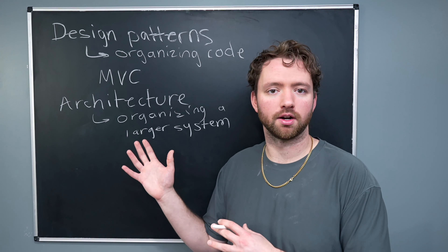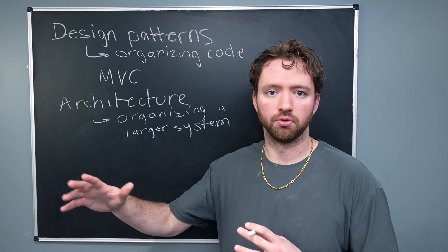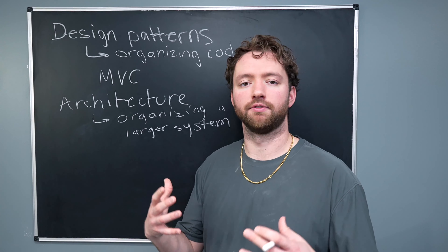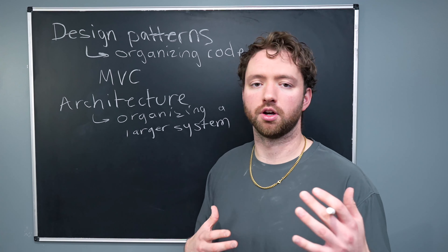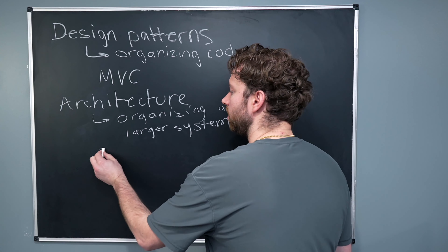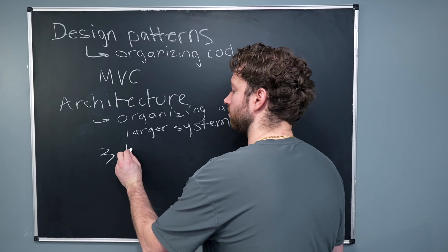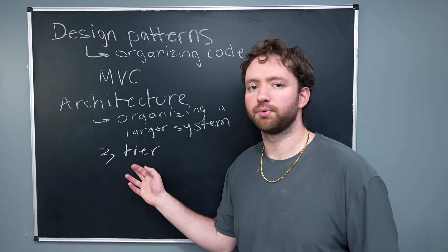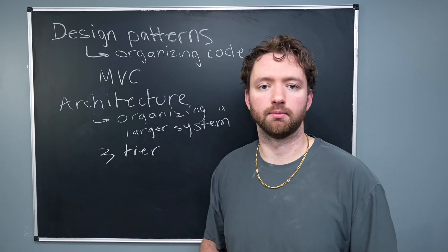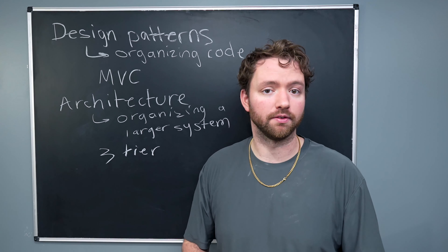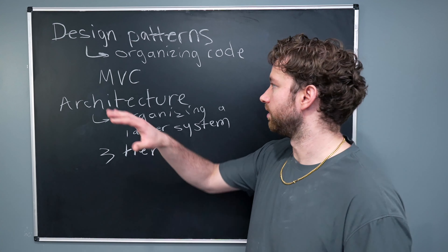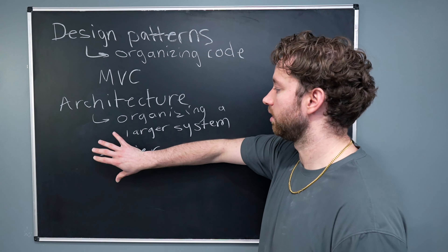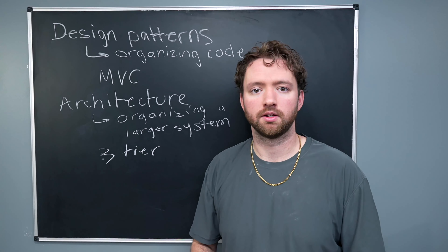If you already understand a lot of this, be patient as we work through the essentials. Within architecture, there are also different patterns. One you might run into is three-tier architecture, which is pretty similar to MVC — we'll talk about how they differ. But the short version: design patterns deal with code organization, while architecture deals with larger system organization.